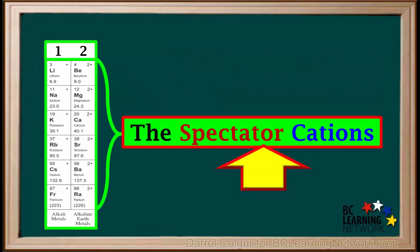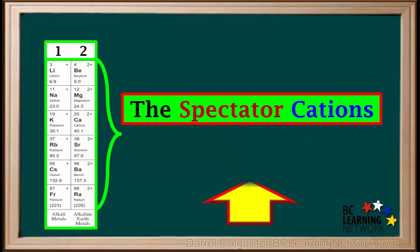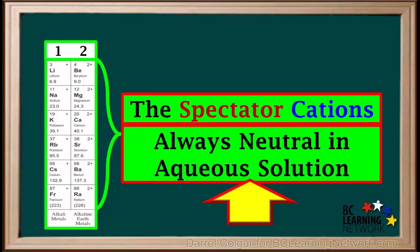Remember, spectator cations are the positive ions of group 1, or alkali metals, and group 2, or alkaline earth metals. These ions are always neutral in aqueous solution.